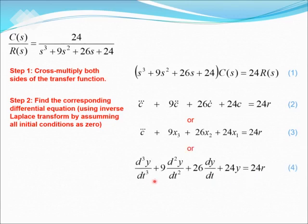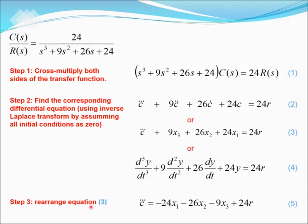The differential equation of the transfer function can also be represented in the normal differentiation form. Step 3, we rearrange equation 3 and find c triple prime, which is equal to minus 24x1 minus 26x2 minus 9x3 plus 24r, which forms equation number 5.